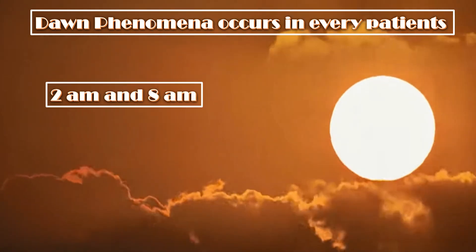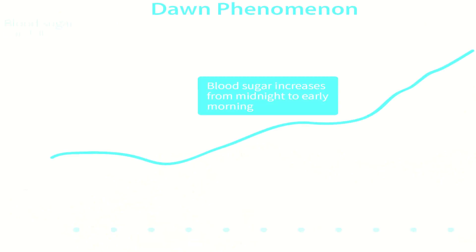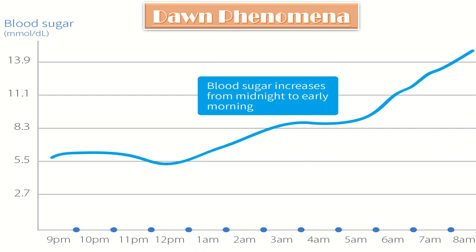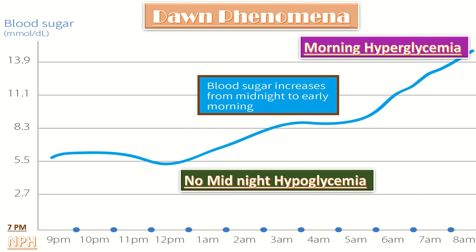Dawn phenomena usually occurs in everybody; it is the phenomenon at dawn occurring between 2 AM to 8 AM. Graphically, at 7 PM the NPH insulin is administered but it is insufficient to maintain control — there will be a glucagon surge at midnight with no midnight hypoglycemia, and the sugar level will increase causing morning hyperglycemia.